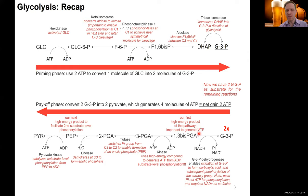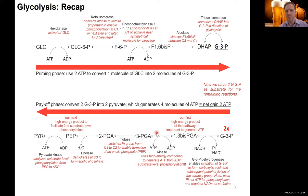Now we use another kinase, but this time running in the direction of producing ATP. We cleave off the phosphoryl group of 1,3-bisPGA; within the enzyme it gets attached to ADP, generating ATP. We release 3-phosphoglycerate (3-PGA). This dephosphorylation — a phosphoryl group transfer from this high-energy compound to ADP — makes our first two molecules of ATP. Remember: we go in with two molecules of G3P, so everything is times two.